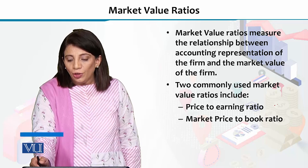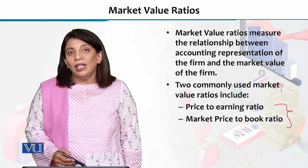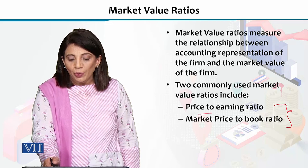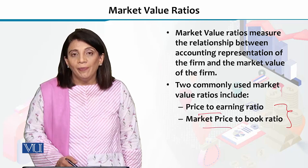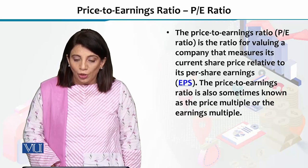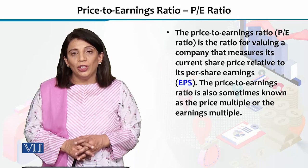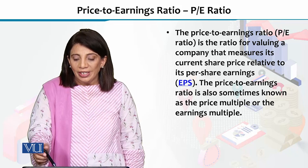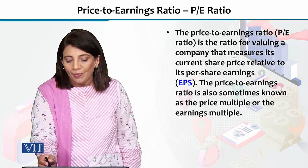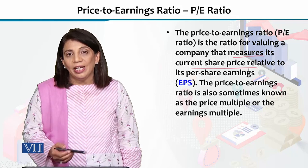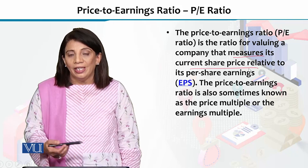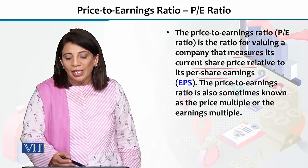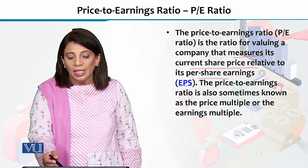There are two frequently calculated market value ratios. The first one is the price-to-earnings ratio, and then we have the market price-to-book ratio. For the price-to-earnings ratio, which we call the PE ratio, we take the current share price to assess it.